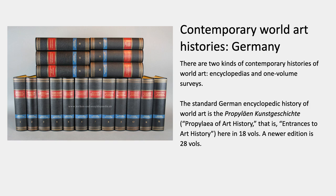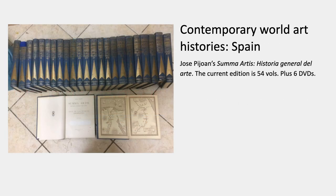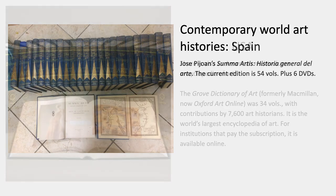The standard German encyclopedia, which is still in print, is the Propylaia of art history — meaning entrances or gateways. The Propylaia was an entrance to a Greek temple. Here's an 18-volume edition of that. A newer one is 28 volumes. In Spain, there's one by Jose Pijuan, who wrote the first number of volumes himself, and the current edition is up to 54 volumes plus six DVDs.